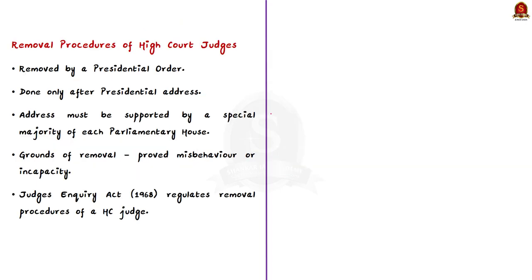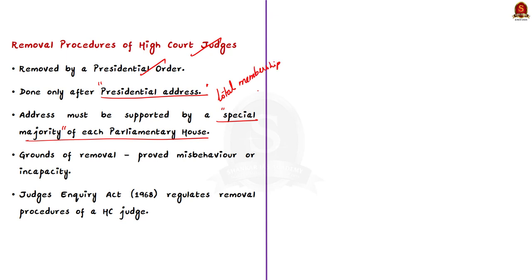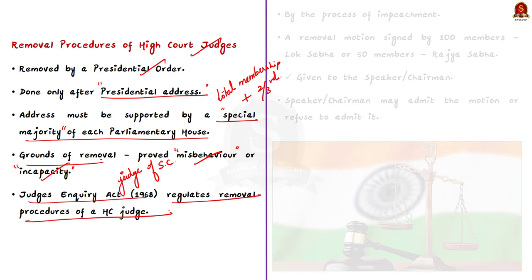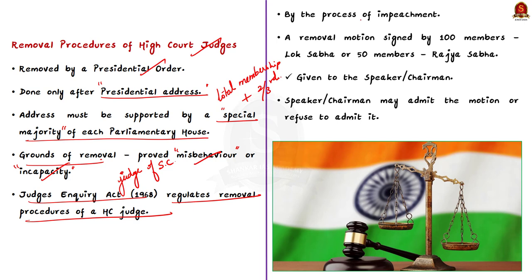A judge of the High Court can be removed from office by a Presidential Order only after an address by the Parliament presented in the same session for such removal. The address must be supported by a special majority — a majority of total membership of the House and a majority of not less than two-thirds of the members present and voting. The grounds for removal are proved misbehavior or incapacity. A judge of the High Court can be removed in the same manner and on the same grounds as a judge of the Supreme Court. The Judges Enquiry Act 1968 regulates the procedure relating to removal of a High Court judge through impeachment.